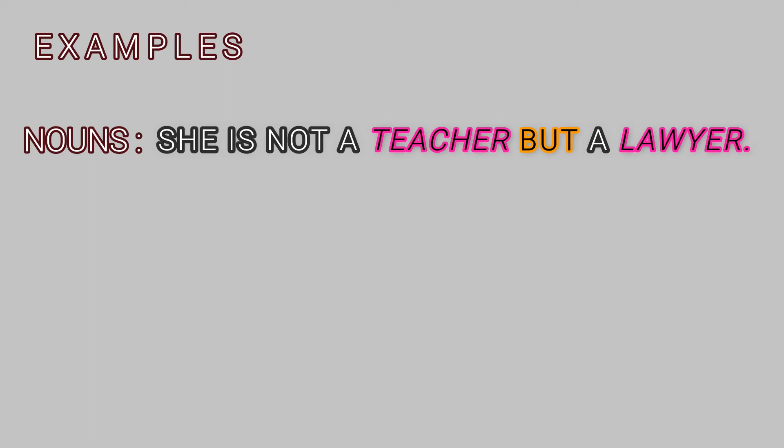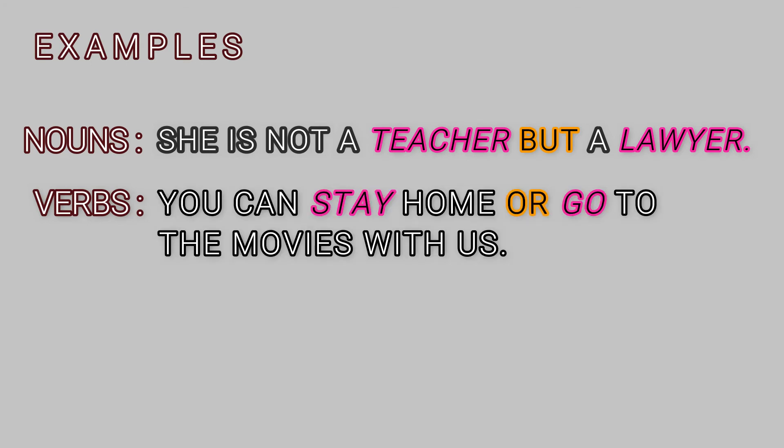And here's the example where two verbs are joined by a coordinate conjunction. You can stay home or go to the movies with us. Well, stay and go are verbs. They are joined by a coordinate conjunction or.